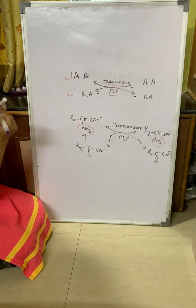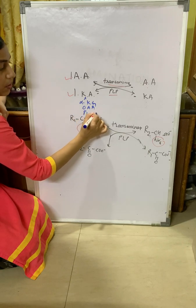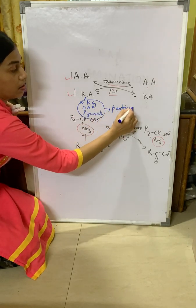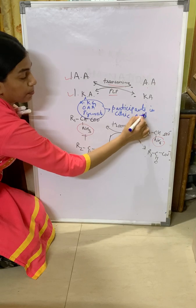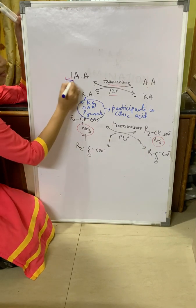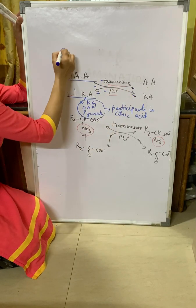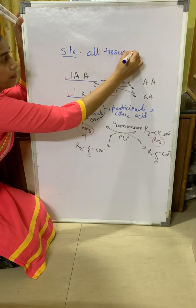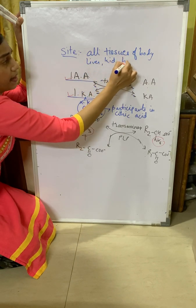The keto acids that generally take part in this reaction are alpha-ketoglutarate, oxaloacetate, and pyruvate — all participants in the citric acid cycle, meaning they are always present in the body. Transamination can be present in all tissues of the body, especially liver, kidney, brain, and heart. It will occur in both cytosol and mitochondria.